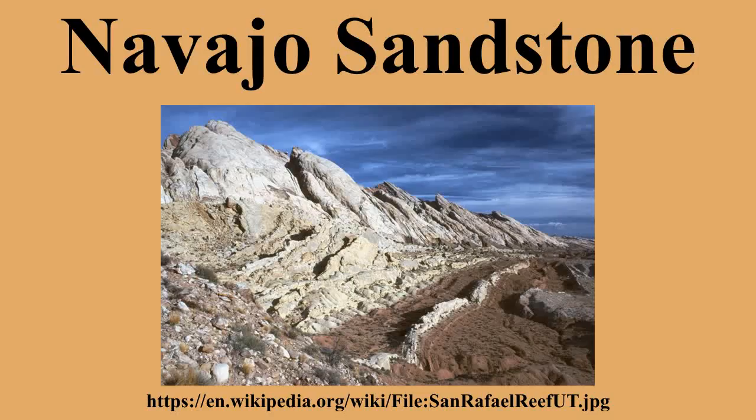and limonite precipitated within spaces between quartz grains. Variations in the type and proportions of precipitated iron oxides resulted in the different black-brown, crimson, vermilion, orange, salmon, peach, pink, gold, and yellow colors of the Navajo Sandstone.